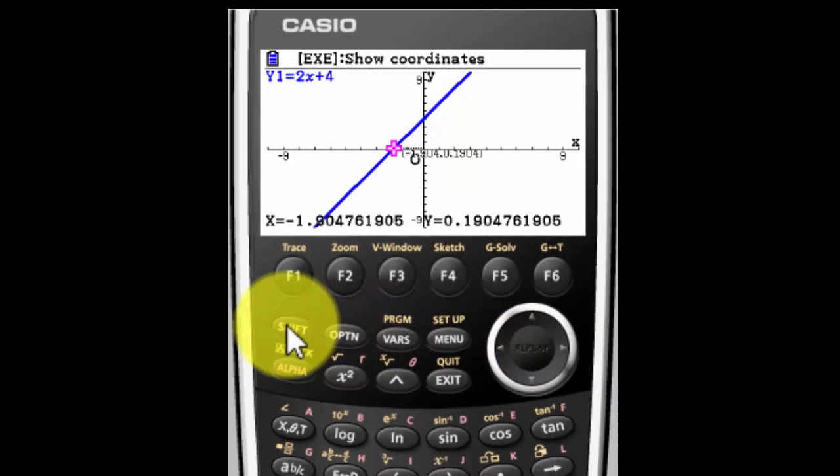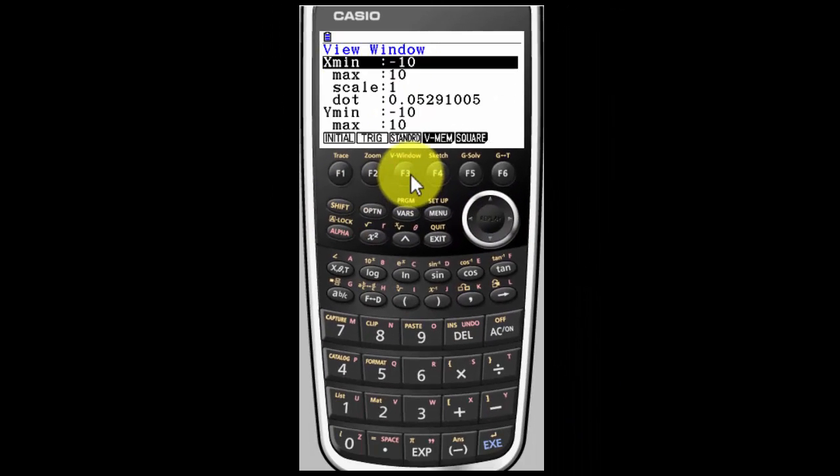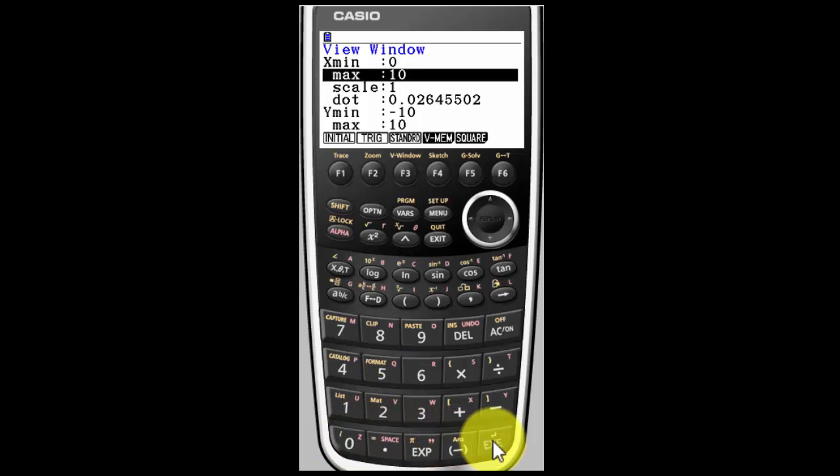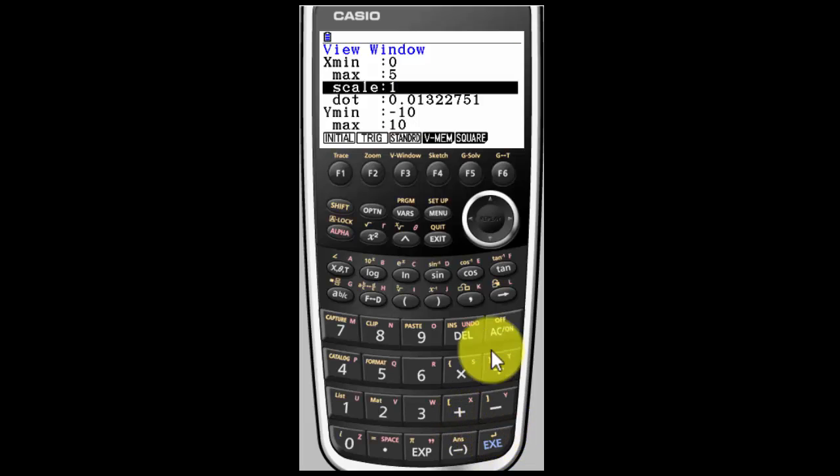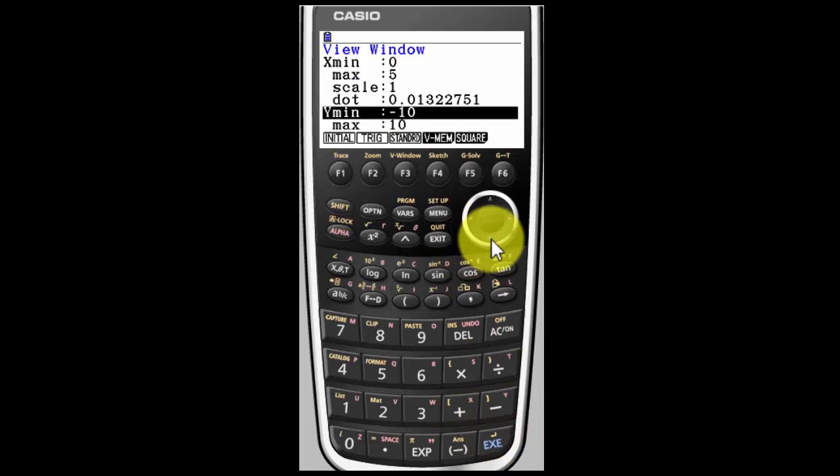Let's say I want to change the view window again. Shift view window. Only now I want to go from 0 to 5 on the x-scale. And on the y-scale I also want to go from 0 to 5.